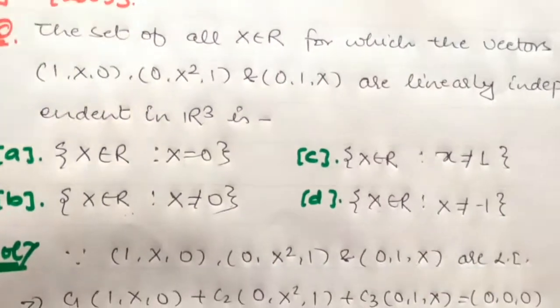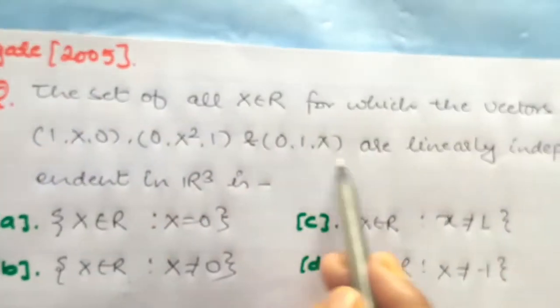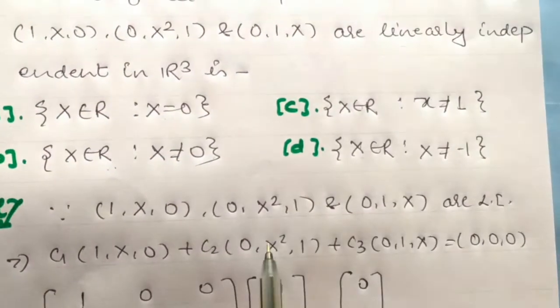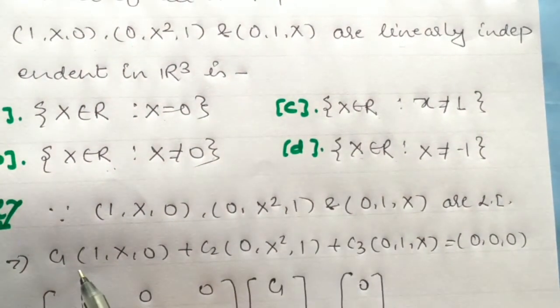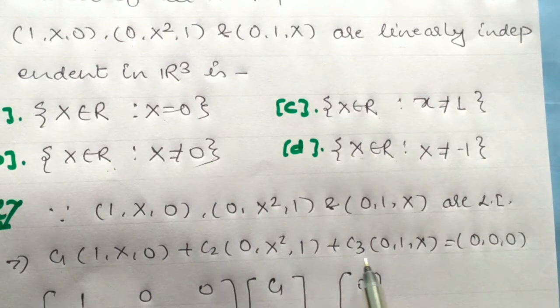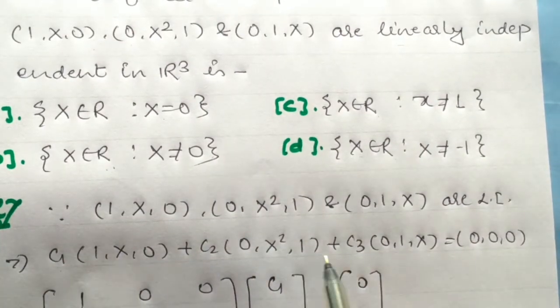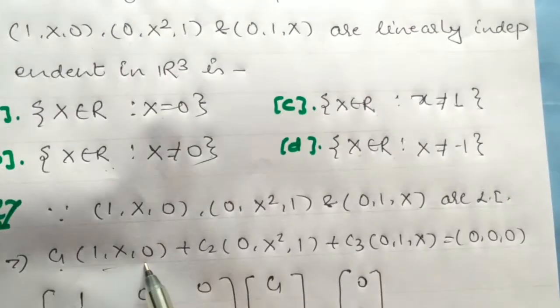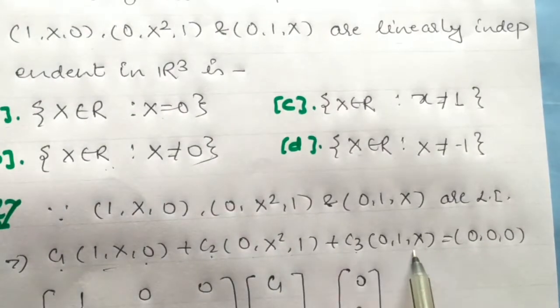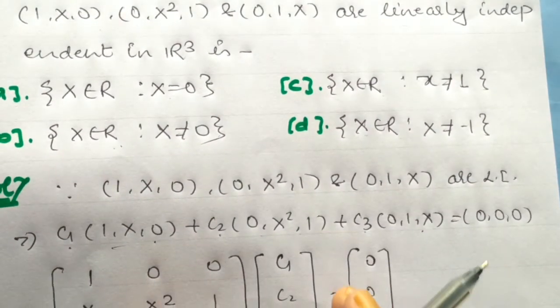Let's check when these three vectors are linearly independent. If they are independent, then we can say that c₁α₁ + c₂α₂ + c₃α₃ equals zero, and we need to form the matrix.